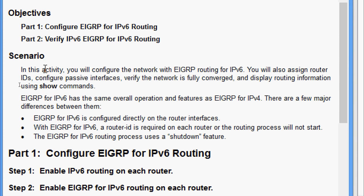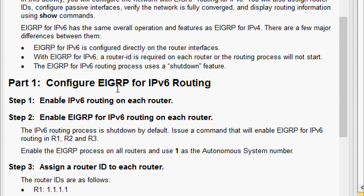EIGRP for IPv6 has the same overall operation and features as EIGRP for IPv4, but there are a few major differences. EIGRP for IPv6 is configured directly on the router interfaces. A router ID is required on each router or the routing process will not start. The EIGRP for IPv6 routing process uses a shutdown feature.